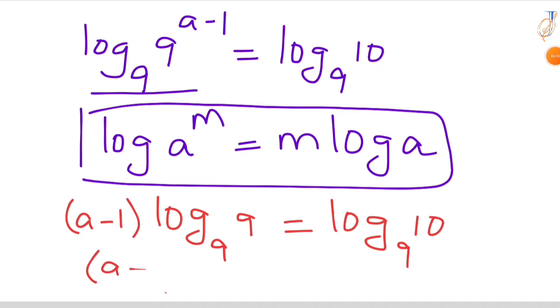A minus 1 times 1. Since log 9 base 9 the value is 1, so here comes 1 that is equal to log 10 base 9. LHS becomes a minus 1. Then RHS we have log 10 base 9.